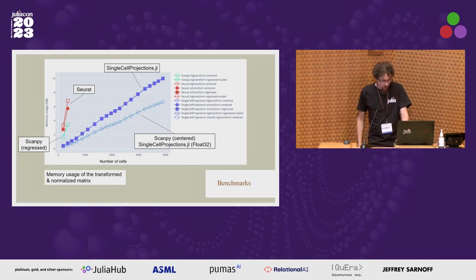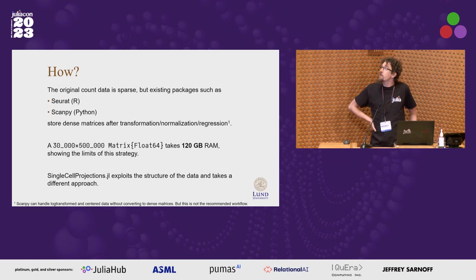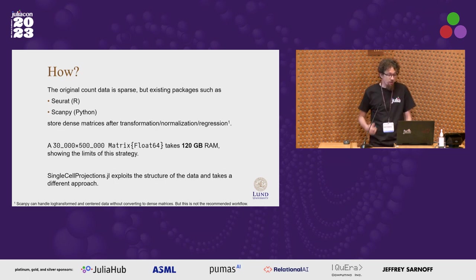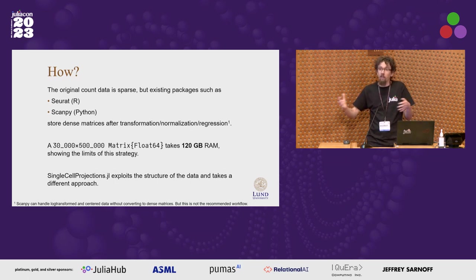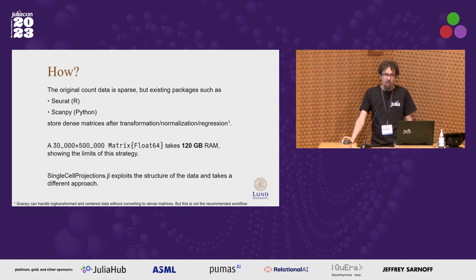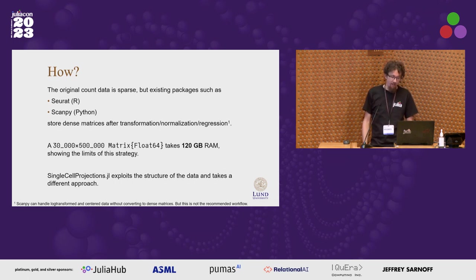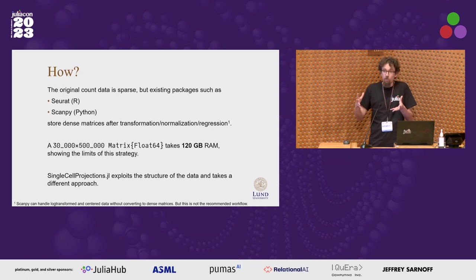Now the fun part: how do we achieve this? The common strategy in tools like Seurat in R and Scanpy in Python is to work with dense matrices — after just a little processing, the structure becomes complicated and they end up dense. If we think about 30,000 genes and 500,000 cells, that's 120 gigabytes of RAM and doesn't scale well. My idea was: there's structure here, it was sparse — we must be able to leverage that.